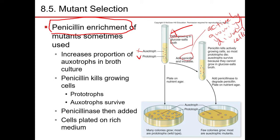Peptidoglycan is only synthesized when the cell is undergoing division, because in a cell that doesn't divide there is no need to make new peptidoglycan. Peptidoglycan is only made when the cell divides because it needs to make new components, which include the cell wall. So penicillin targets actively dividing cells because it targets peptidoglycan synthesis, which only happens in actively dividing cells.